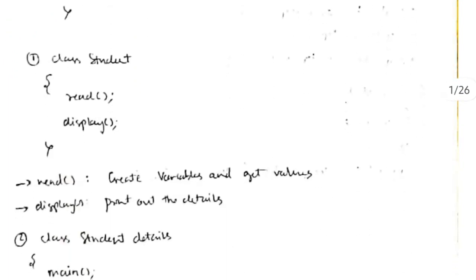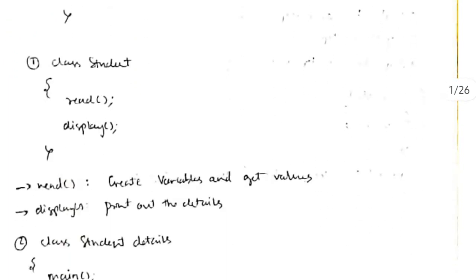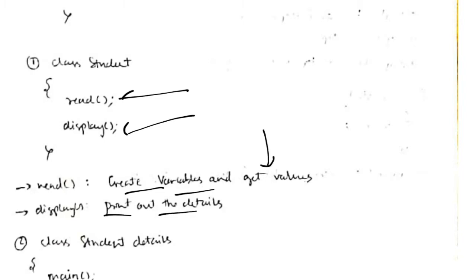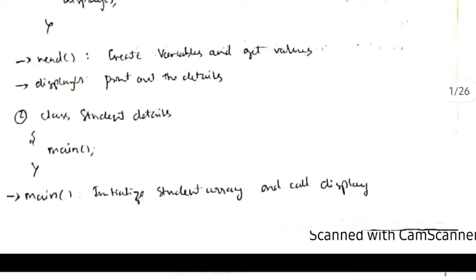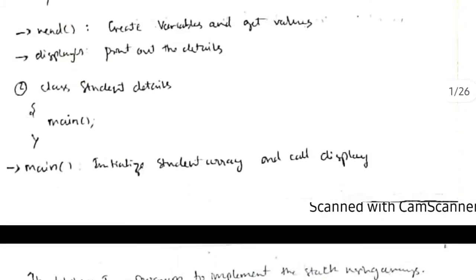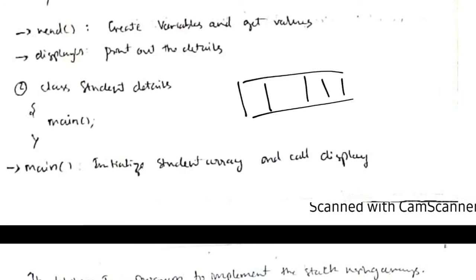In the first class, Student, we'll have two functions: read and display. After creating the variables like USN and all, we'll take the values and write a function to print them. Class StudentDetails will be the main function, where we create a Student object and call the read and display functions.